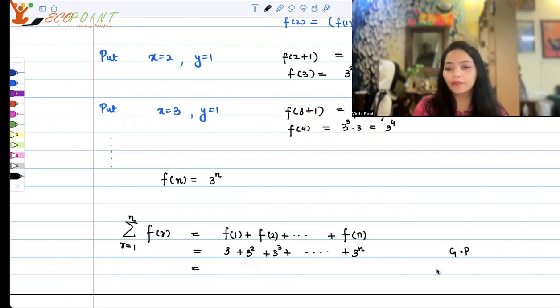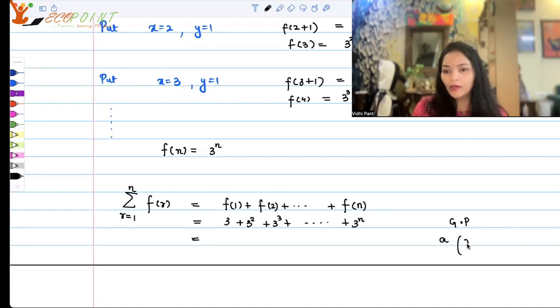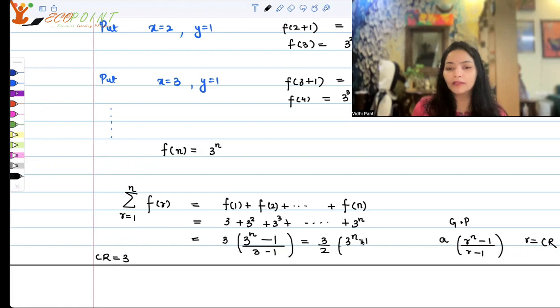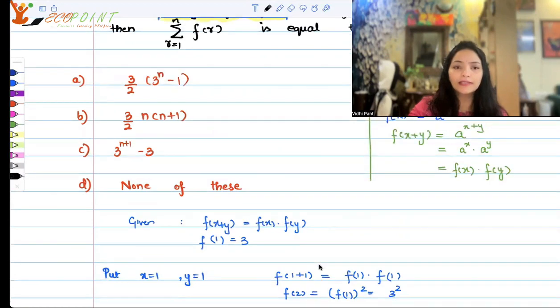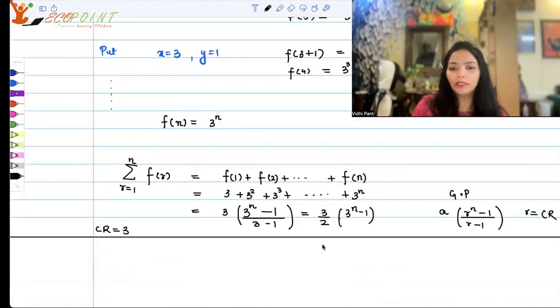So finite geometric sum will be a(r^n - 1)/(r - 1), where r stands for the common ratio. What is the common ratio? The common ratio is 3. So we will be getting 3, 3^n, a is also 3, r is also 3, 3(3^n - 1)/(3 - 1), which gives us 3/2(3^n - 1). And that is one of the options, isn't it? Yes, it is the very first option, option A. That should be the correct option.